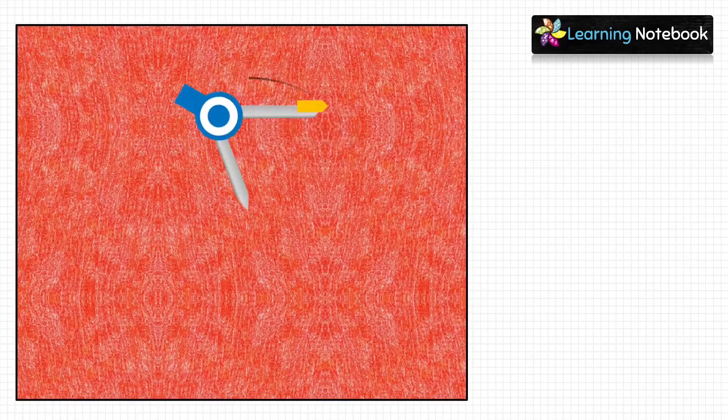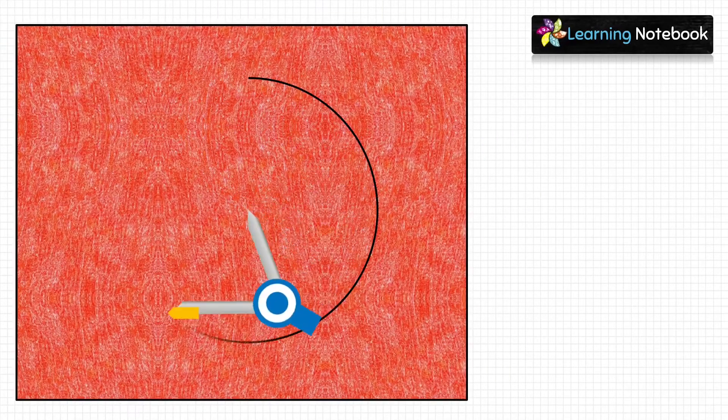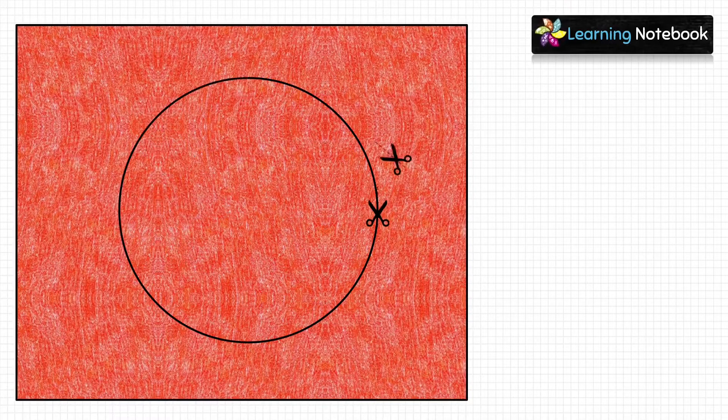Next, take the red-colored sheet and draw a circle of 5 centimeters on it, and then cut out this circle.